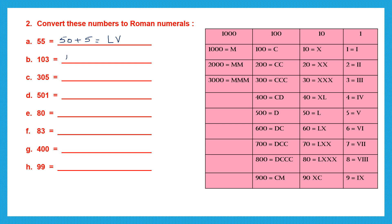Next is 103, which is 100 plus 3. Looking at the table, 100 is C and 3 is III, so 103 is CIII. Then 305 is 300 plus 5. Looking at the hundreds column, 300 is CCC and 5 is V, so 305 is CCCV.